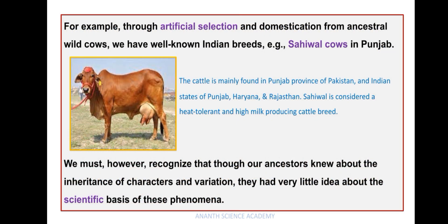For example, through artificial selection and domestication from ancestral wild cows, we have well-known Indian breeds — for example, Sahiwal cows in Punjab. The cattle is mainly found in the Punjab province of Pakistan and Indian states of Punjab, Haryana and Rajasthan. Sahiwal is considered a heat-tolerant and high-milk-producing cattle breed.